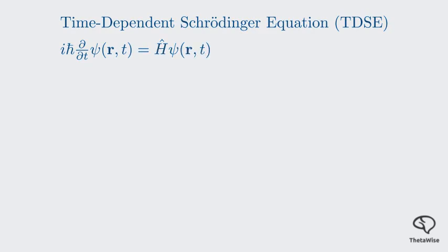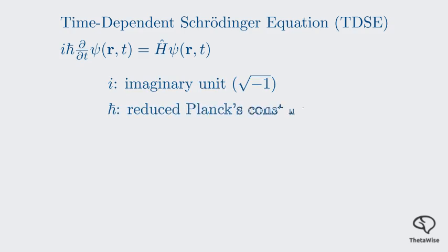Let's look at the terms. First, we have i, which is the imaginary unit, i equals the square root of negative 1. Then we have ℏ, which is Planck's constant divided by 2π. It's a fundamental constant that defines the scale of quantum effects. The left side of the equation tells us about the wave function's evolution in time.